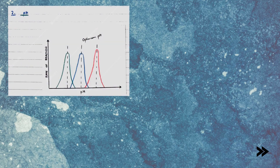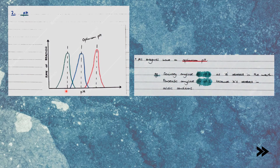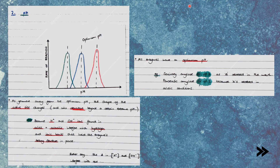Second, we have pH. Here we have a number of curves for different enzymes. Different enzymes have different optimum pHs. For example, salivary amylase has an optimum pH of 7, as it's secreted in the mouth, whereas pancreatic amylase has an optimum pH of 2, because it's secreted in acidic conditions. As you move away from the optimum pH, the shape of the active site changes and will denature beyond a certain extreme pH. This is because the change in concentration of H⁺ and OH⁻ ions interferes with hydrogen and ionic bonds which hold the enzyme's tertiary structure in place.